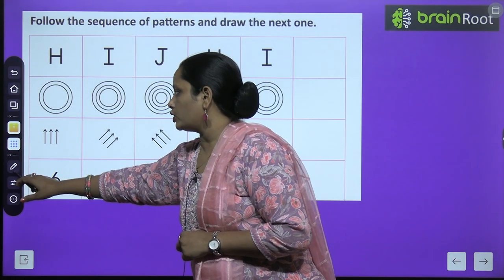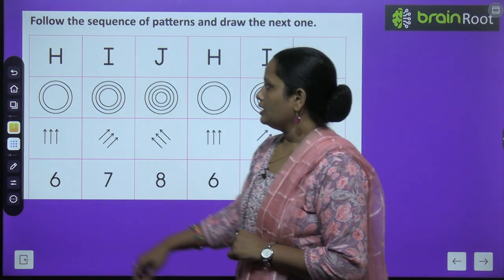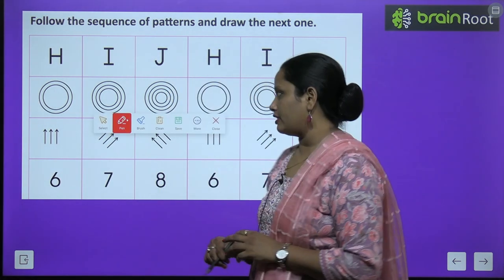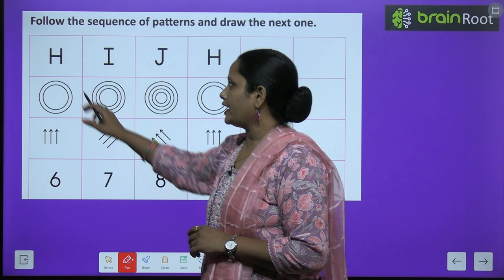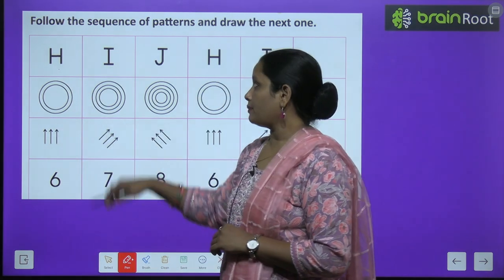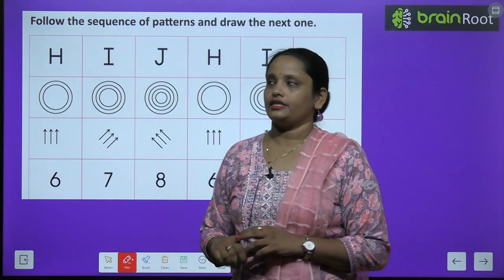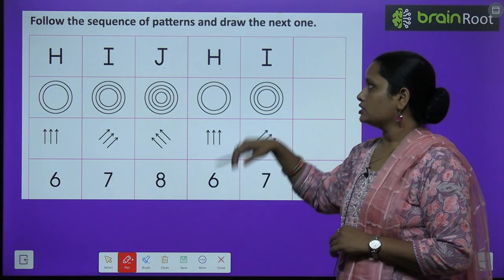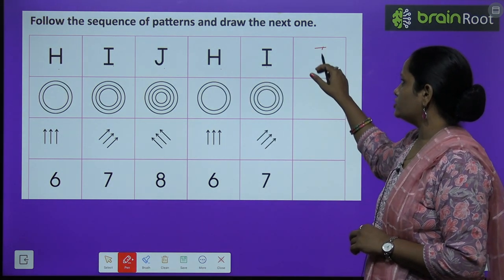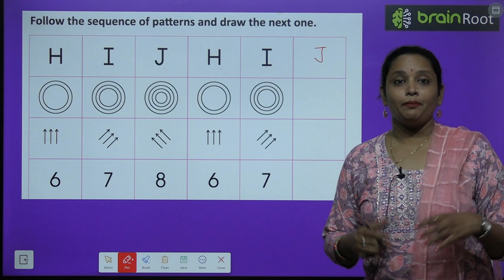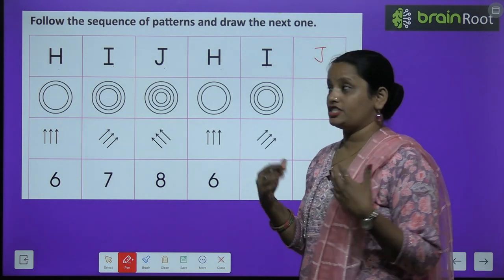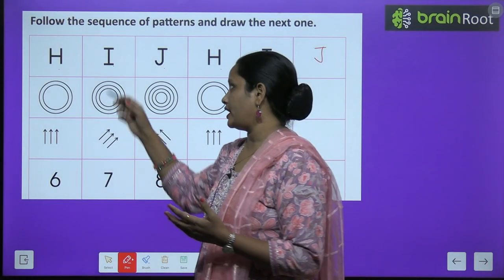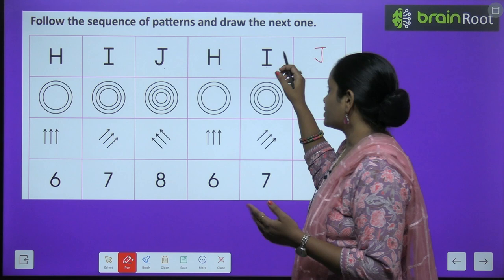So here you can see first picture in the first picture. English alphabet. It is a letter H. After that second picture is I, J, H, I, J. This is the pattern. Similar things are written repeatedly. H, I, J, H, I, J.